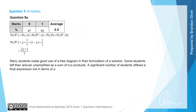From the examiner's report, 53% of students gained the mark for that question, with many making good use of a tree diagram. Some students left their answer unsimplified as the sum of two products, but it was best to simplify to a single fraction. A significant number of students offered a final expression not in terms of P, despite that being explicitly asked for.